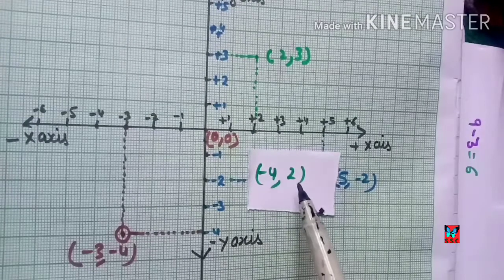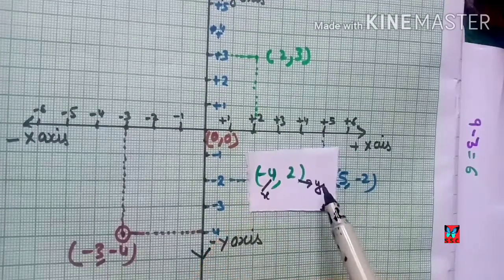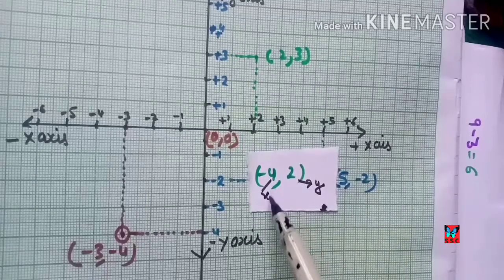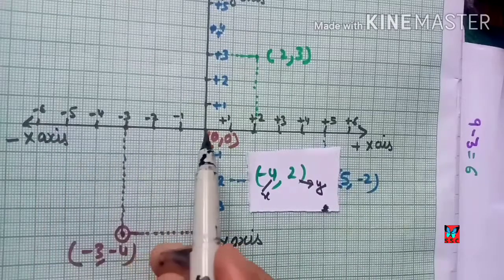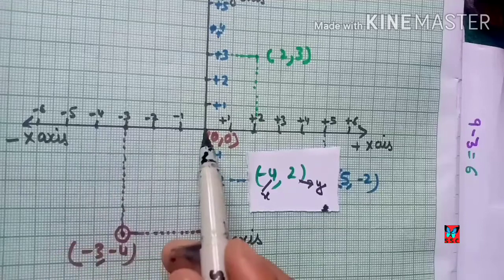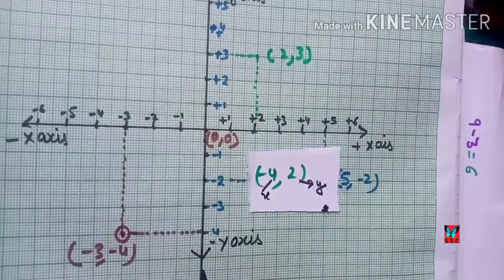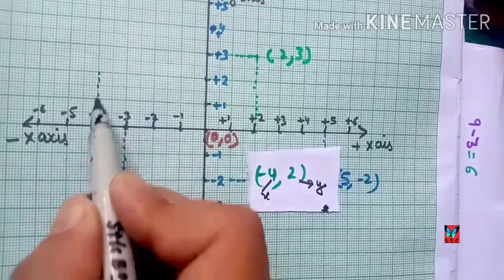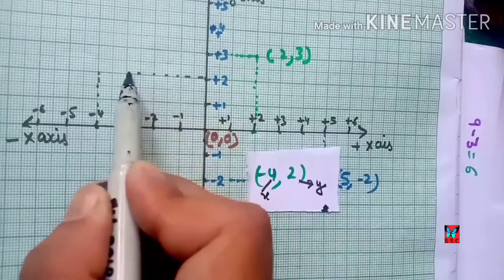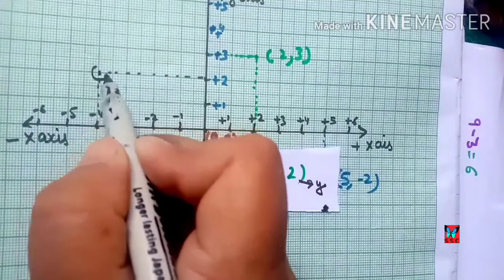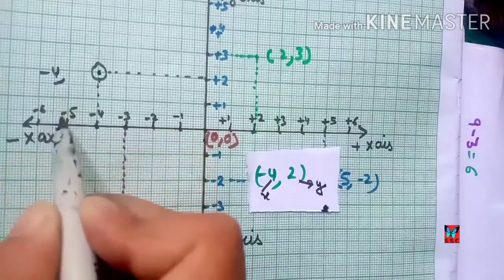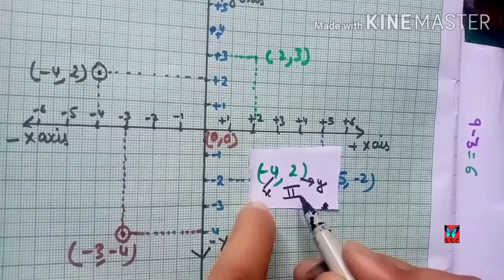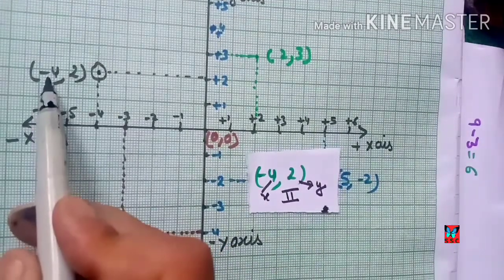Now I will plot the point (-4, 2). The x-coordinate is -4 and y-coordinate is 2. For x = -4 we go on the negative x-axis, and for y = +2 we go upward on the positive y-axis. Where these intersect is the point (-4, 2), which lies in the second quadrant, where x is negative and y is positive.